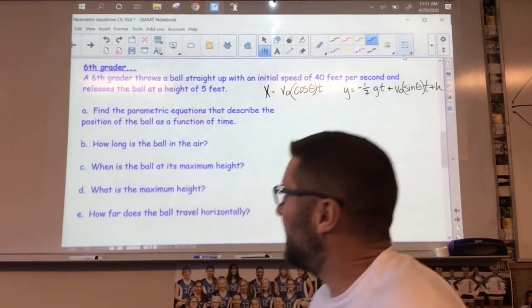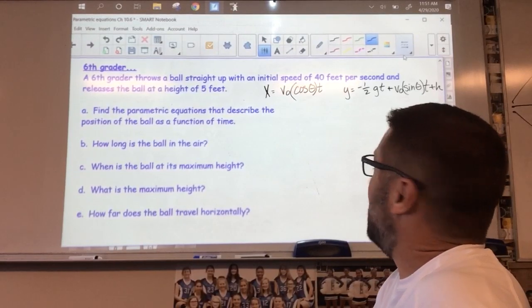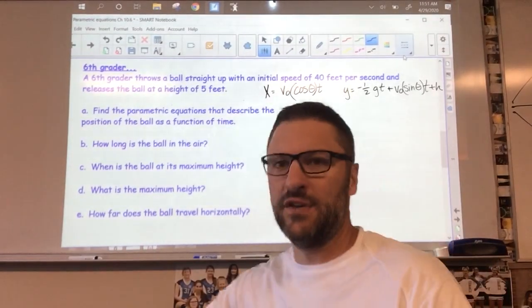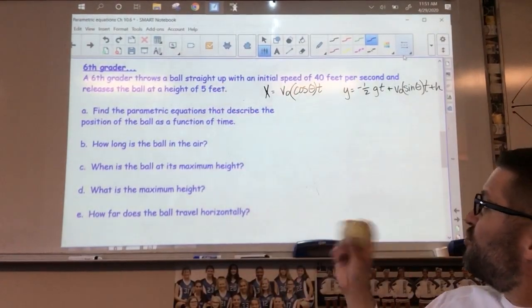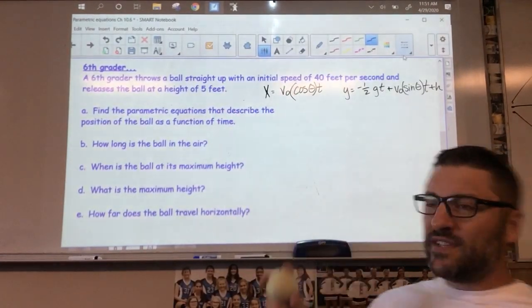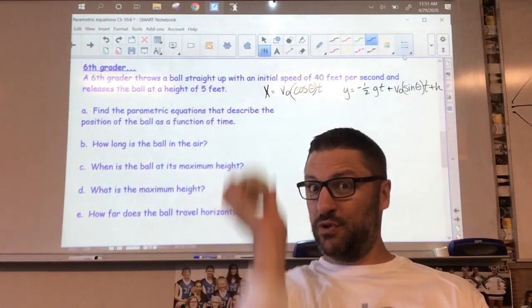So first one, a sixth grader throws a ball straight up with an initial velocity of 40 feet per second and releases the ball at a height of five feet. So he throws it up, releases at five feet and it goes straight up and straight down.